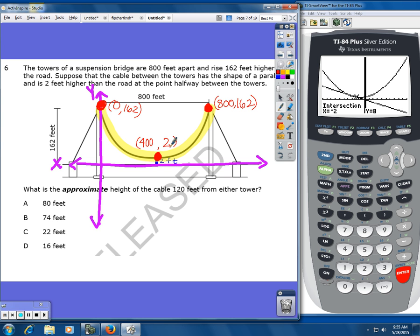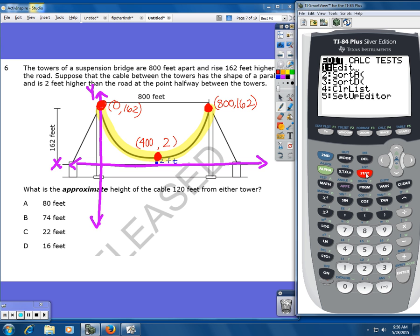So what I'm going to do is I'm going to go into my calculator and go to stat, and then enter for edit. And I'm going to list my X values in list 1 and my Y values in list 2.